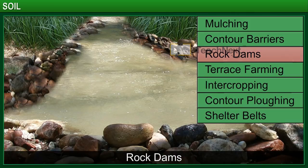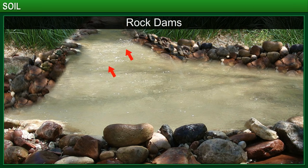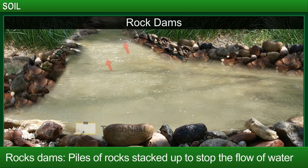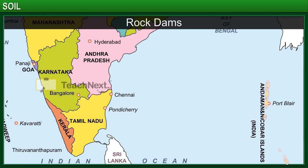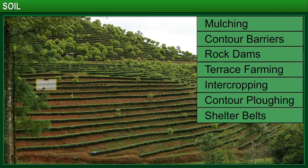Rock dams are dams created from piles of rocks that are stacked up to slow down the flow of water and prevent the formation of gullies. This curtails soil erosion. Rock dams are being extensively used as a soil conservation measure in the Andaman and Nicobar Islands in India.